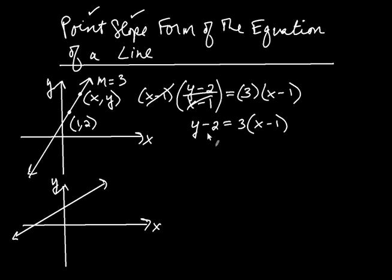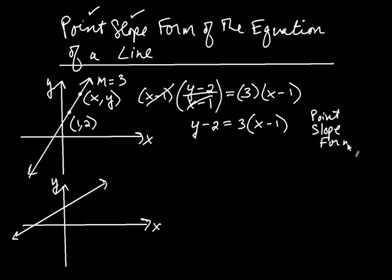Any point that's on the line, x comma y, has to satisfy this equation. This equation is in a special form — it's called the point-slope form. You can see why: looking at this equation, the y-coordinate, the 2, goes right here, so it's y take away the y-coordinate. That equals the slope — there's your 3 — times x take away the x-coordinate, which is 1.